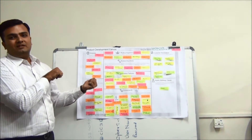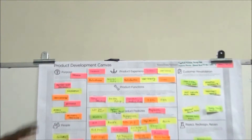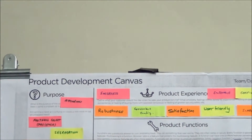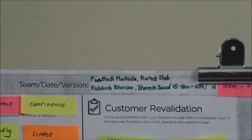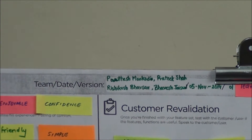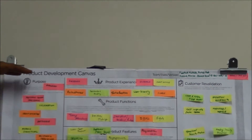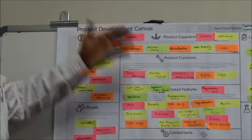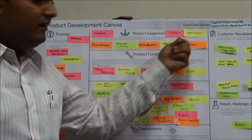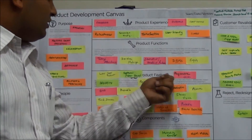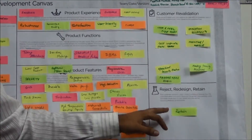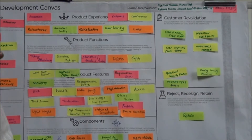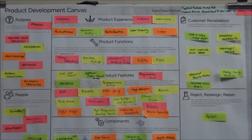Now we are going for the third canvas, known as the product development canvas. The motive of this canvas is to get product-level development. The different sections of this canvas are: purpose, people, product experience once it is designed, the functions of the product, product features, components, customer revalidation, and whether the product needs to be rejected, redesigned, or retained as is.